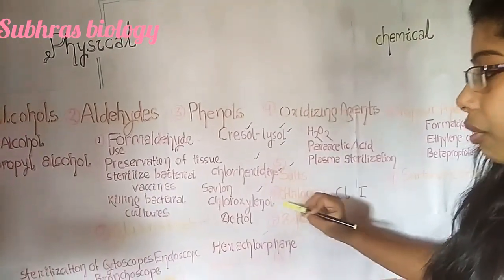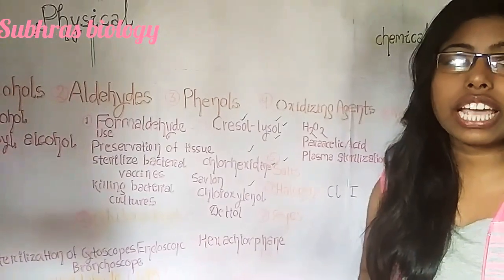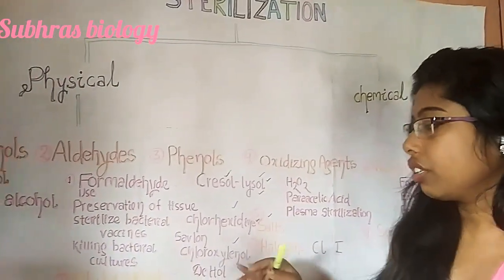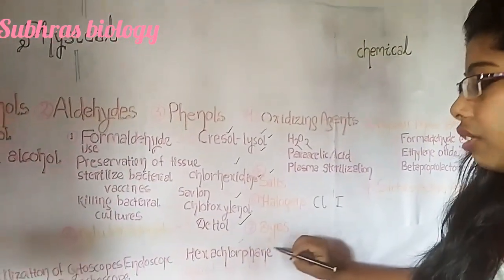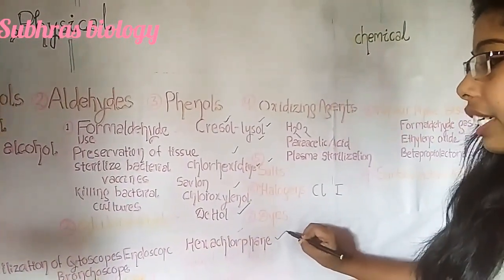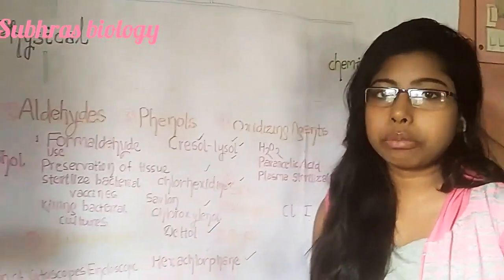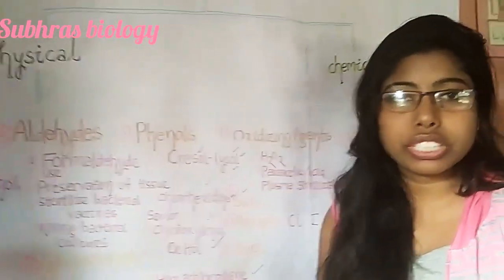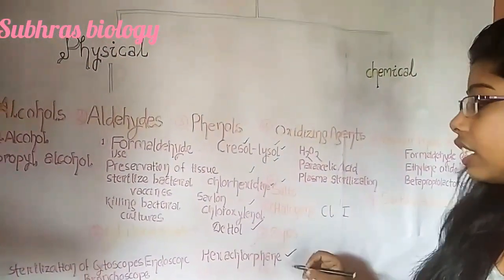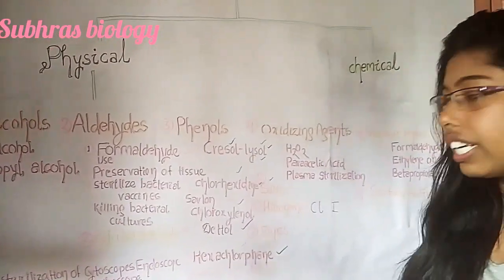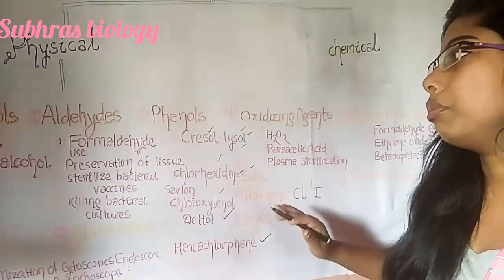The third phenol derivative is chloroxylenol — Dettol, which you get from the market, has chloroxylenol as its active ingredient. It is mainly bactericidal in action. The fourth derivative is hexachlorophene, which is mainly effective against gram-positive bacteria such as staphylococcal infections rather than gram-negative bacteria. Hexachlorophene is used for sterilization of staphylococcal infections.